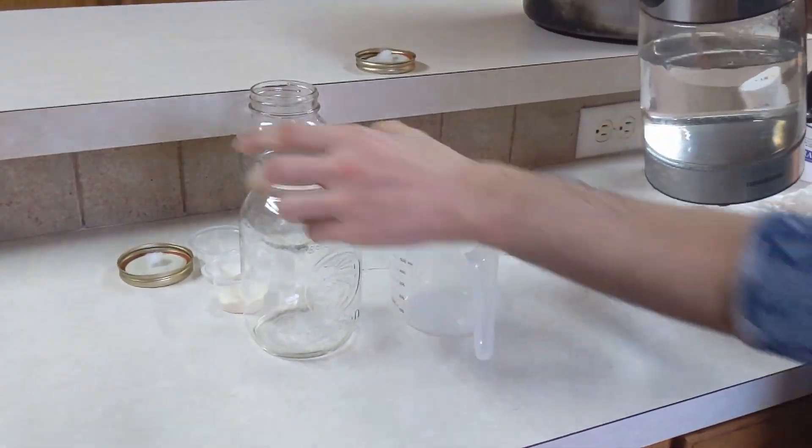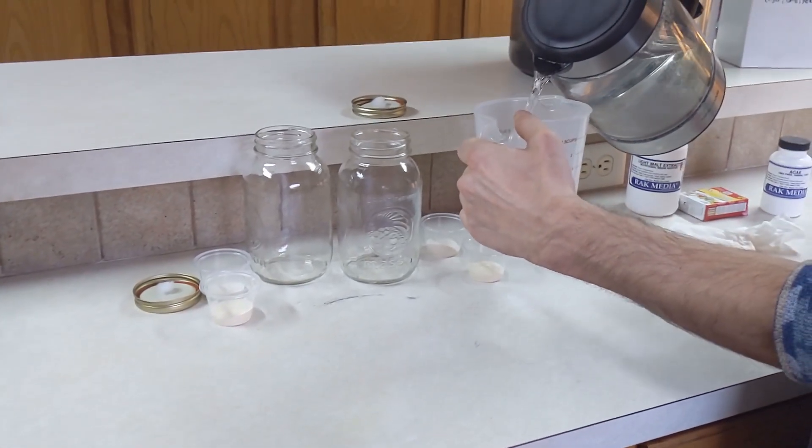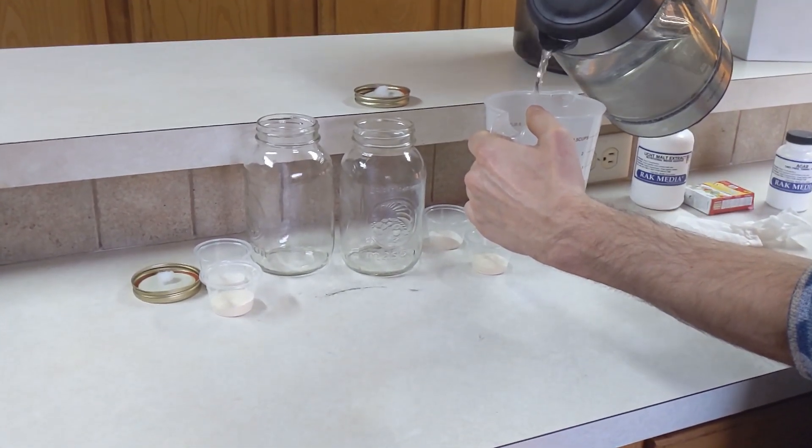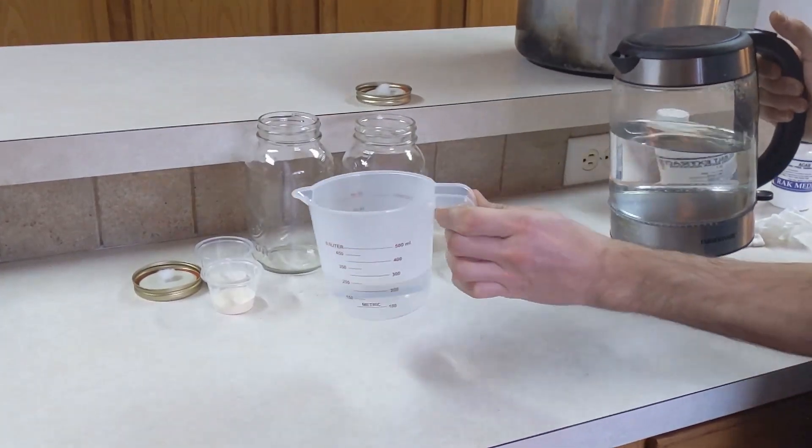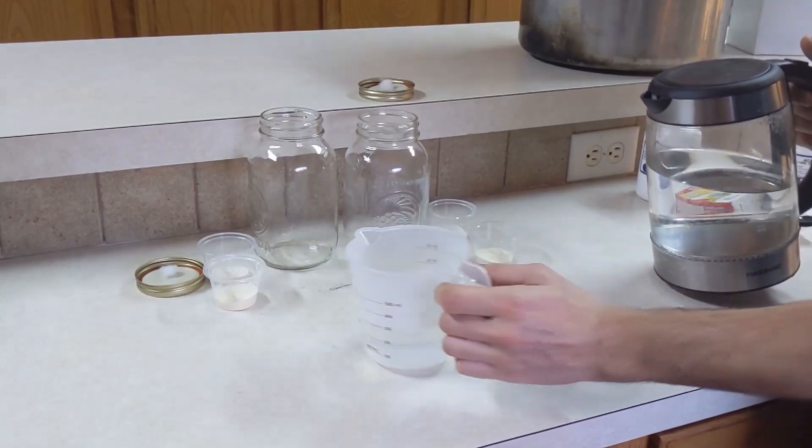So first of all, I like to use some mason jars and I like to use the small mouths. Makes it easier for pouring the agar later. I also use 500 milliliters of boiling water. You can use a pot or kettle like this to get your water to boil, totally fine.